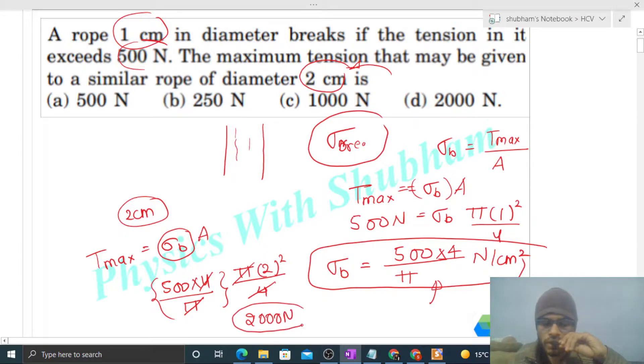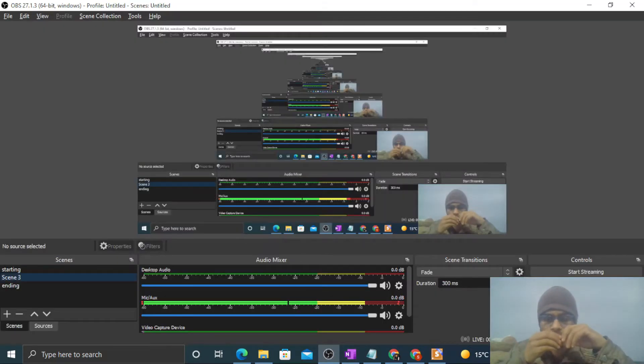This is the maximum tension that can be given to the rope made of the same material and having a diameter of 2 centimeter. I think you have understood. Let me know if you still have any confusion, we can discuss further. Let's keep working hard, best of luck, bye.